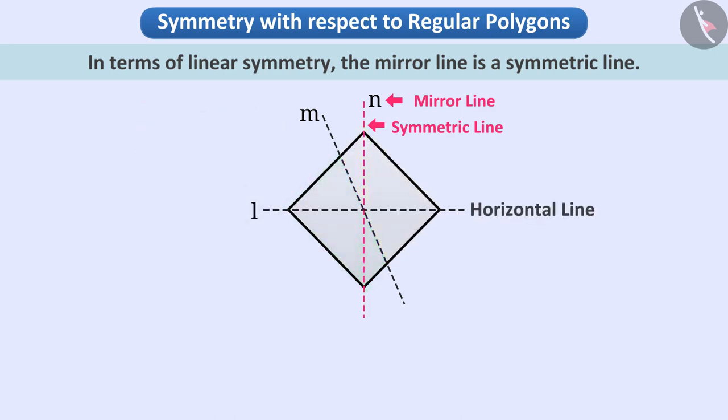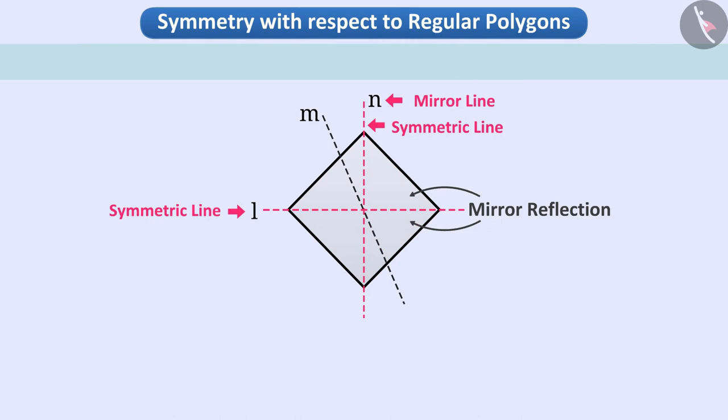If we draw a horizontal line like this in this figure, the line L also divides the shape into two parts that are mirror reflections of each other. This allows us to know that a shape can have more than one symmetric line.